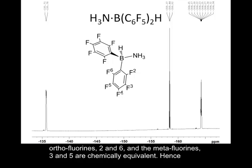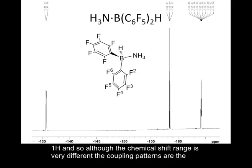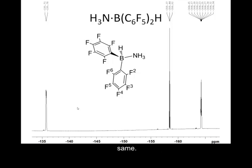So we are going to have three resonances in the 19F NMR. Now 19F NMR is not proton NMR, but that shouldn't throw you, because the 19F nucleus has a nuclear spin of one-half, which is the same as a proton. Although the chemical shift range — signals occurring between minus 130 and minus 170 ppm — is very different from proton NMR, the coupling patterns we see are very similar and predictable in the same way.